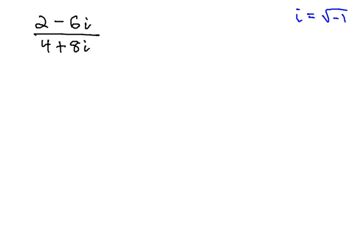The common error that I see people do on problems like this is they think we can clear an i by multiplying top and bottom by i, but that only works if there's only one term to multiply the i by. If there's two terms, that won't really clear the i at all.